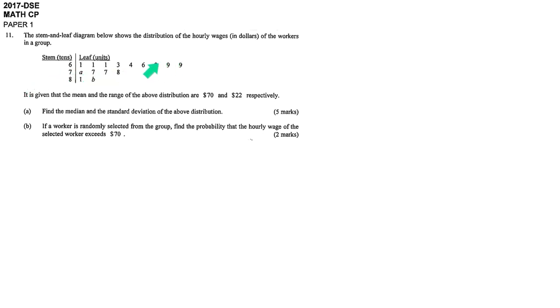They give you a stem-and-leaf diagram for some data and then you find that A and B are unknown at this moment. Afterward, they tell you that the mean is 70 and the range is 22. That means they try to give you some information to find out the value of A and B. After that, they ask you the median and also the standard deviation.